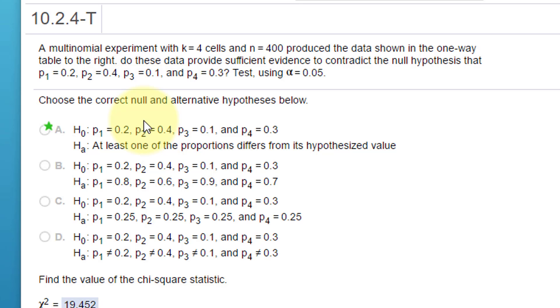The null is always no difference, which means that the proportions we observe will be the same as these proportions there. The alternative is at least one of the proportions differs, and there's ways we can find out which one later on.